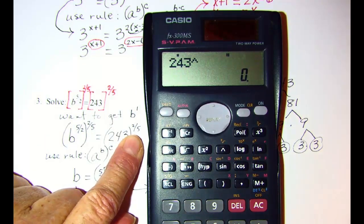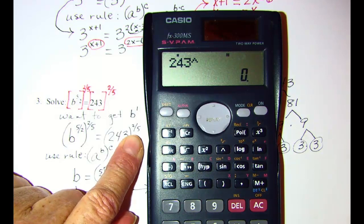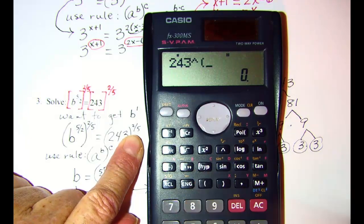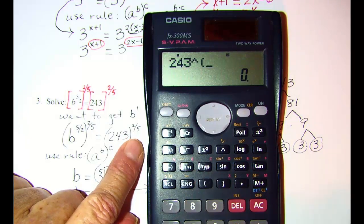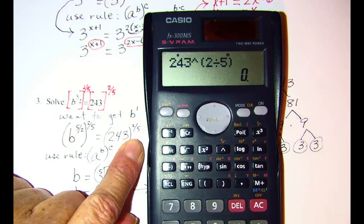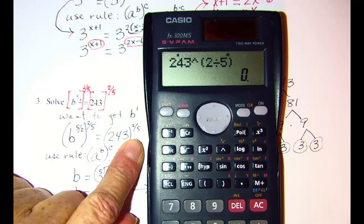I would not get the correct answer because the calculator would just raise to the second power and then divide that answer by 5. So I need to enclose my exponent 2 divided by 5 in parentheses. When I hit equal now I get 9.